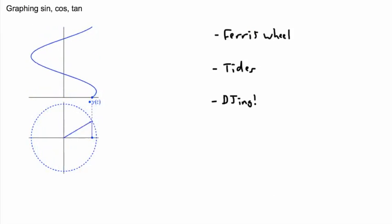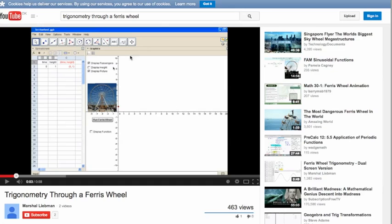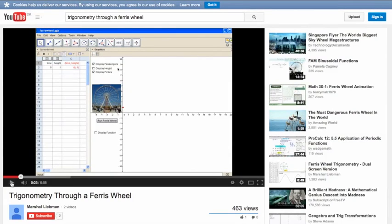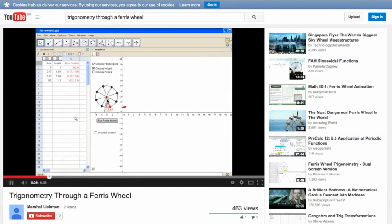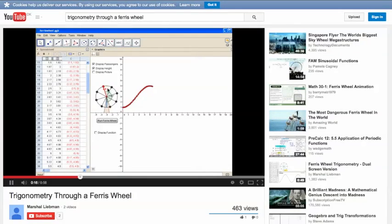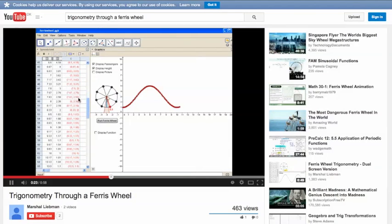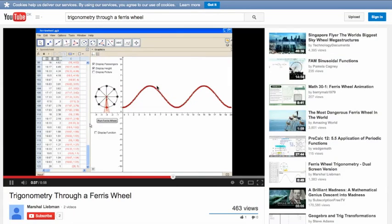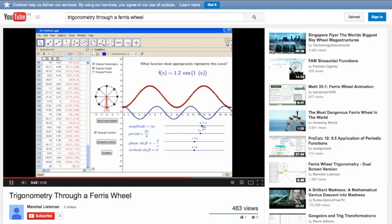I have a YouTube video to show you — someone just made a little animation of trigonometry through a ferris wheel. We're graphing the height of a ferris wheel every second. The x-axis is time and the y-axis is the height of the wheel. You can see this little dot matching the height of the wheel — even though it goes around in a circle, over time it goes up and down and up and down. That's a really nice example of a sine or cosine curve.